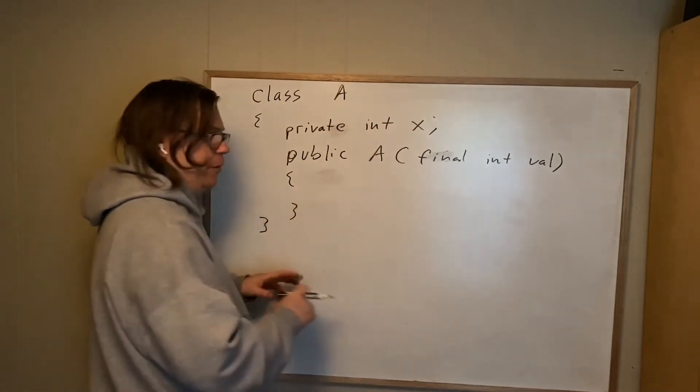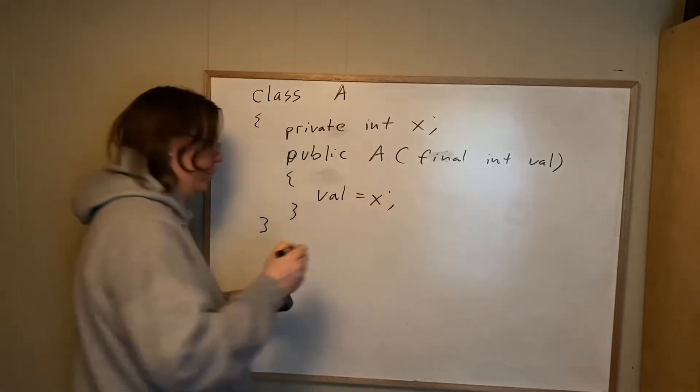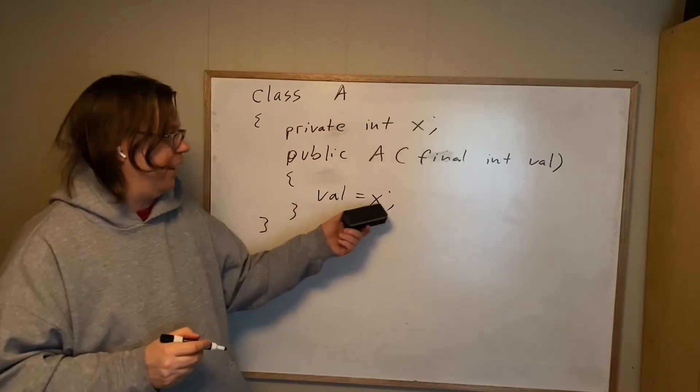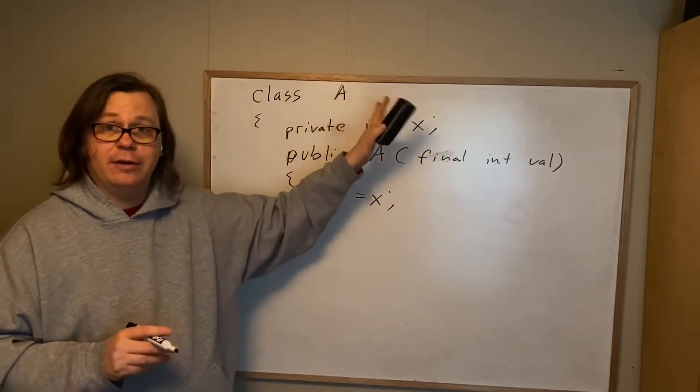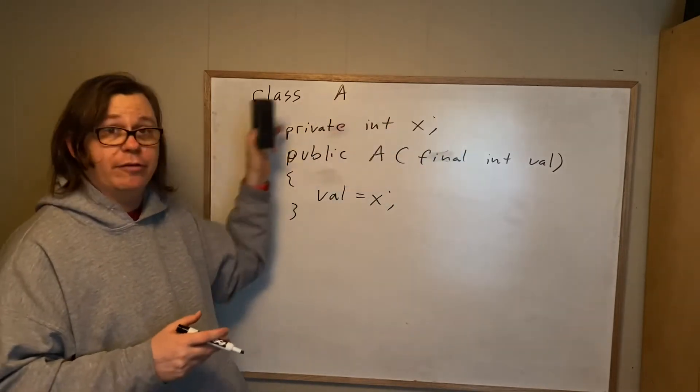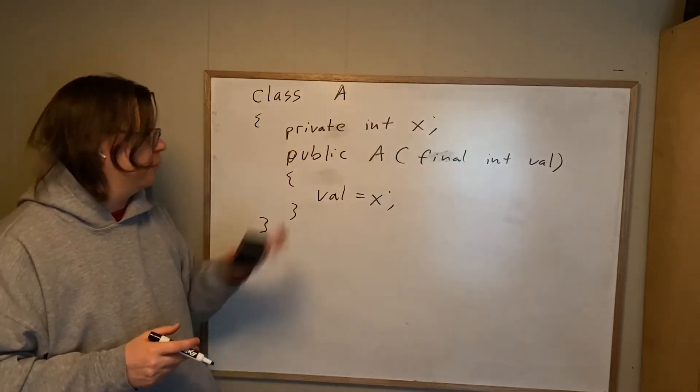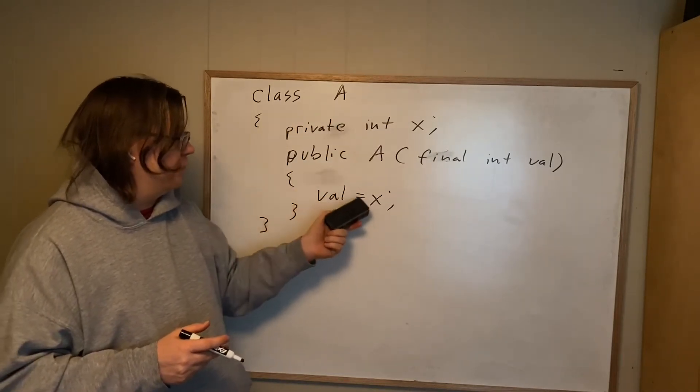If I screw up, and this happens periodically from time to time with various people, myself included, if I screw up and say val is assigned x, that's why I put final here. x is by default zero. It'll be zero, null, or false, because it's a variable outside of all the methods. It's an instance variable. If I say val is assigned x, and I didn't have final here, I'd be altering the parameter to set it to zero.